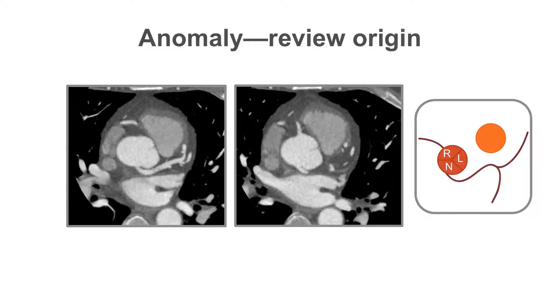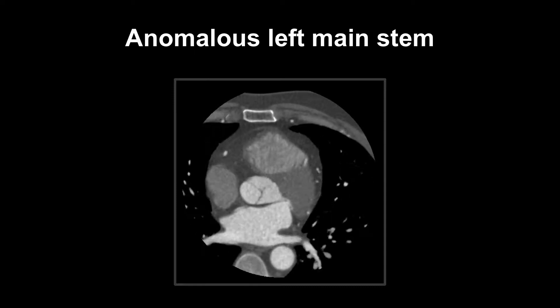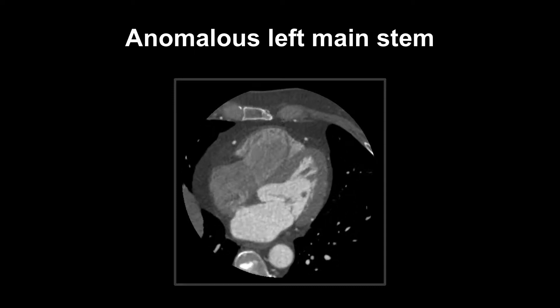This is depicted on the graphic on the right hand side. Remember that with normal coronary anatomy, the left main stem should arise from the left coronary cusp.